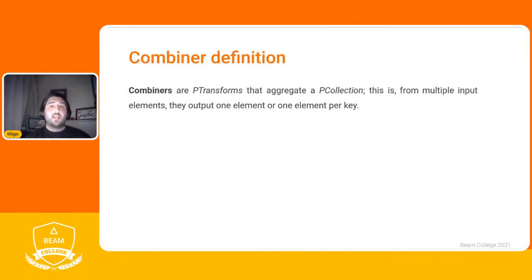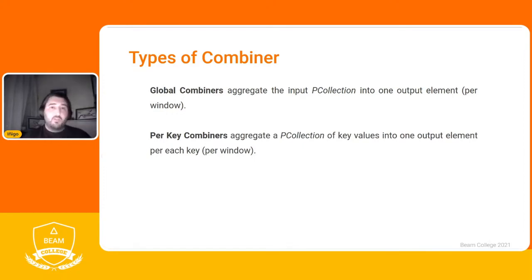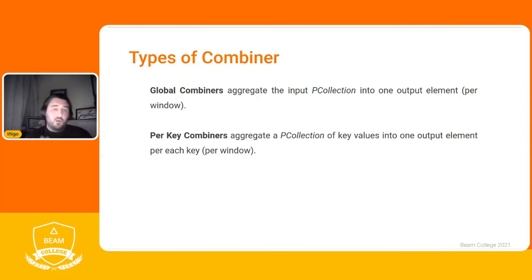Combiners are P-transforms that aggregate our P-collection — we take multiple elements and output one element, or one element per key. We have two types: global combiners that aggregate our input P-collection into one element (or one element per window if using windows), and per-key combiners that aggregate a P-collection of key-value pairs into one output per key, also per window if applicable.